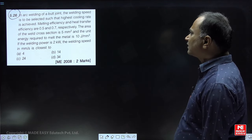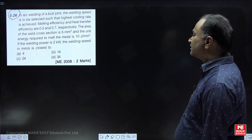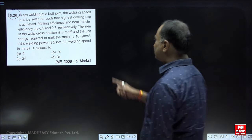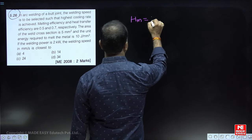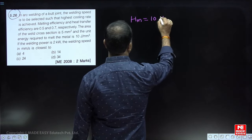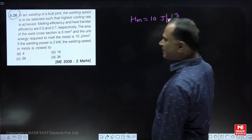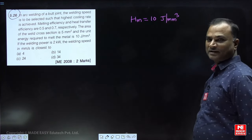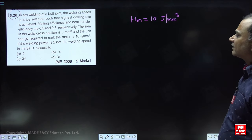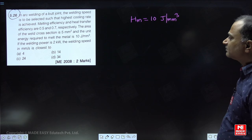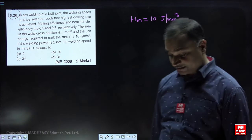The area of the weld cross section is 5 mm² and the unit energy required to melt the metal is 10 joules per mm³ — that is, heat required to melt per unit volume is given. The welding power is 2 kilowatts. The welding speed in mm per second is what we need to find.